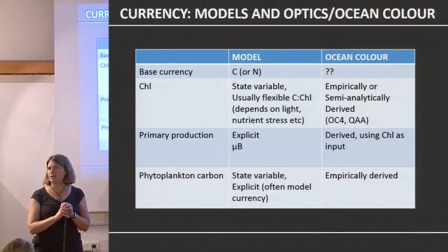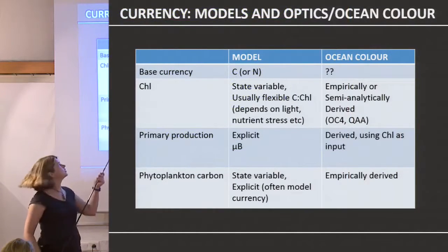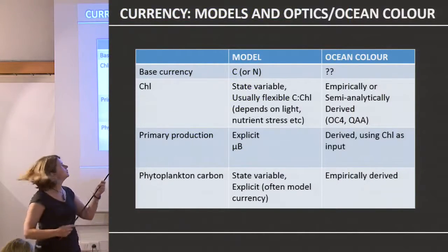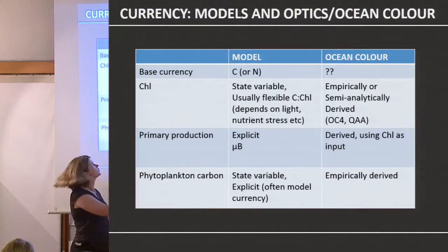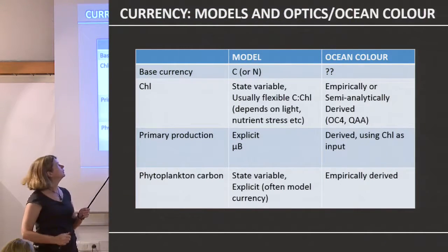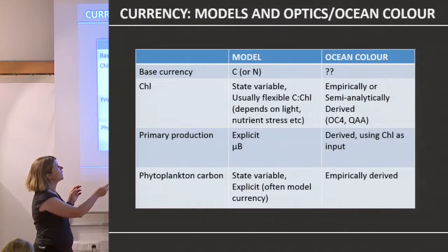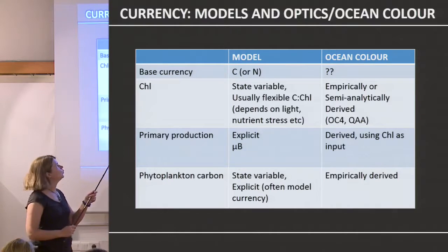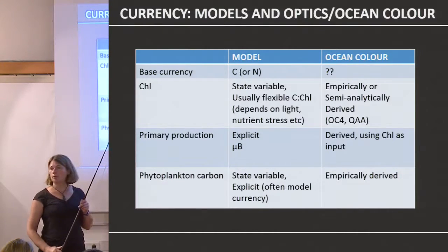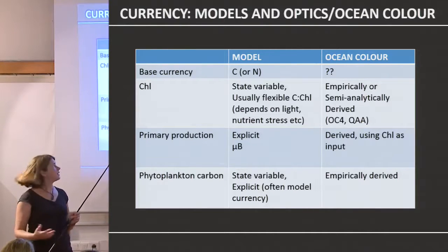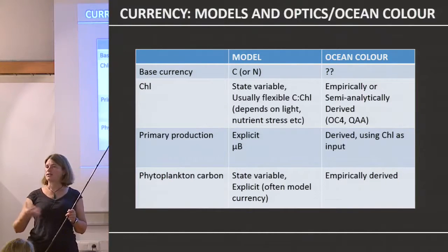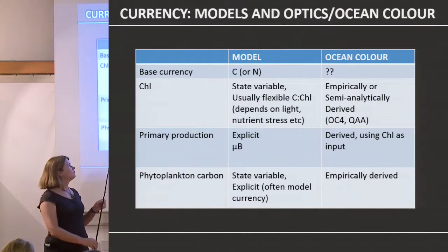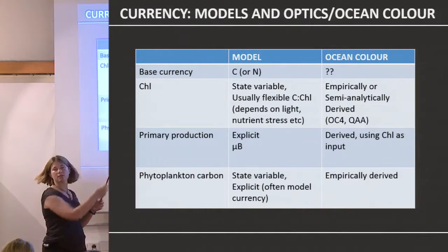I started making up a comparison table and I'm going to go through the model column first. What is the base currency of a model? Usually it's carbon, though some models might use nitrogen or phosphorus. We have chlorophyll, mostly flexible, so chlorophyll is actually a state variable — it gets moved around and changes with light and nutrient stresses. If we want to know primary production, it's easy: we know the biomass, we know the growth rates, and that gives us net primary production. Phytoplankton carbon is a state variable — it's the implicit main thing.